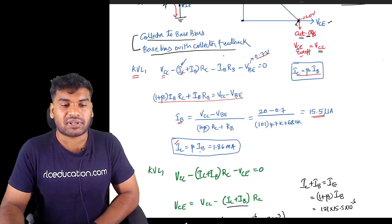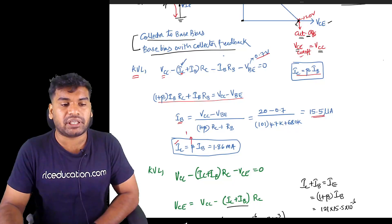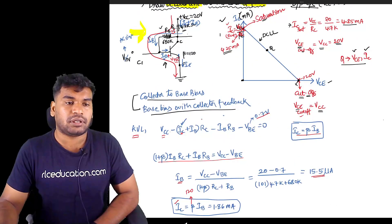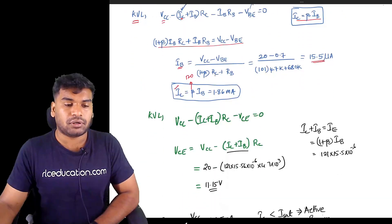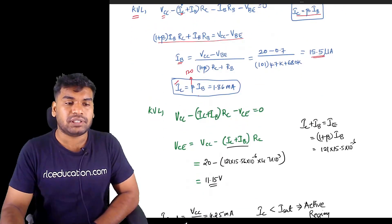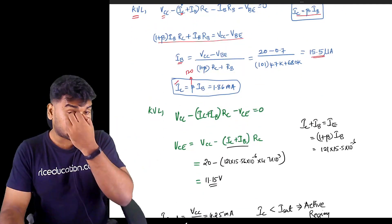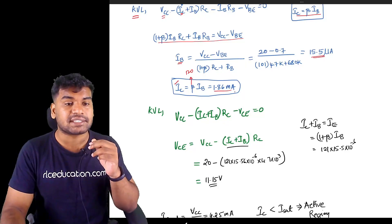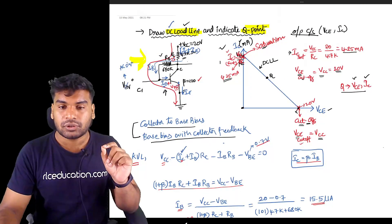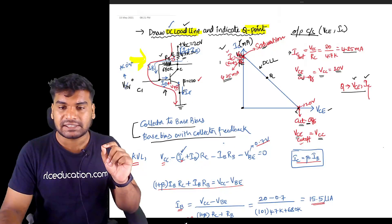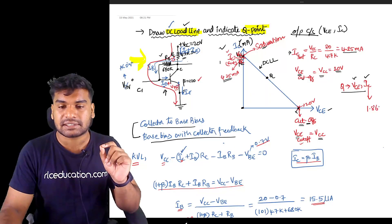You know IC equals beta times IB. Here beta is 120, given in the question. See here. So beta value is 120. Substitute here and I will get 1.86 milliamperes as IC value. You got the value of IC - 1.86 milliamperes.